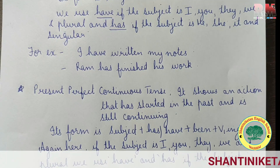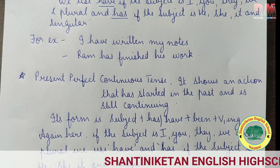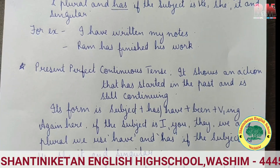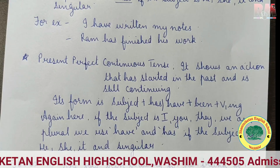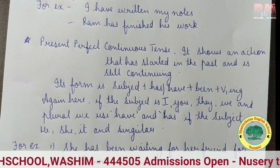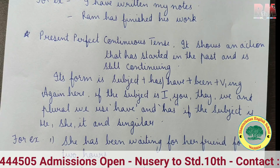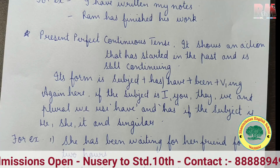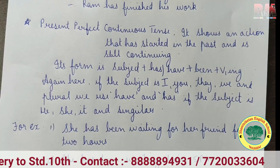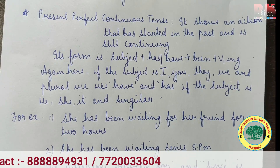Present perfect continuous tense shows an action that has started in the past and is still continuing. The form is subject plus has/have plus been plus V1+ing. We use 'have' if the subject is I, you, they, we, or plural, and 'has' if the subject is he, she, it, or singular. For example: 'She has been waiting for her friend for two hours.' 'She has been waiting since 5 p.m.'